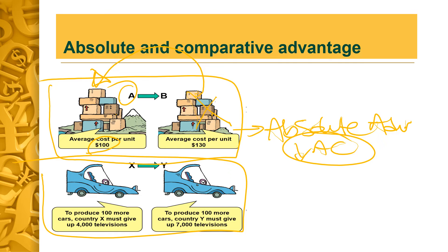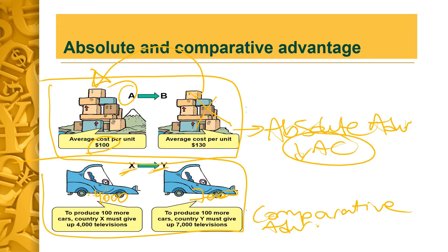When a country imports from other countries, it is not necessarily bad. Now, looking at the other diagram — for country X and country Y: to produce 100 more cars, country X must give up 4,000 televisions, whereas country Y must give up 7,000 televisions. So a country has a comparative advantage in the production of a product relative to other countries when its opportunity cost of producing that product is lower than in any other country.